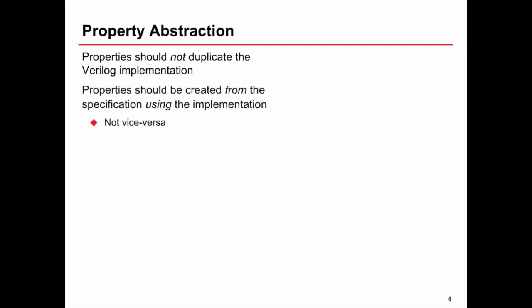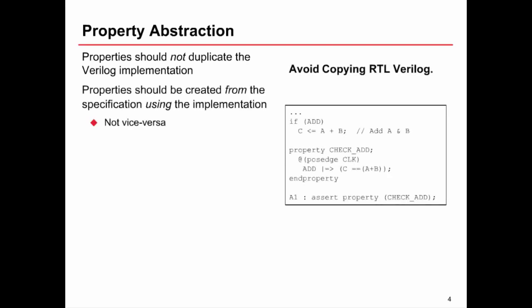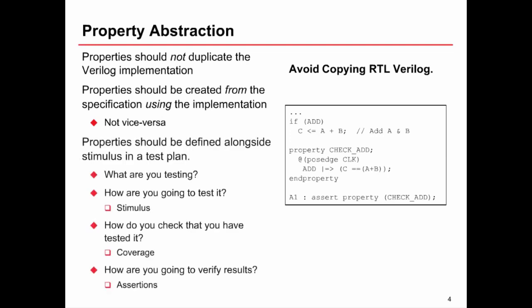you'd notice that the property has just replicated exactly what the RTL says. So a question to ask ourselves here is what do we think we're proving? How would the property ever fail given what we see in front of us? The property should be defined at the verification planning stage.